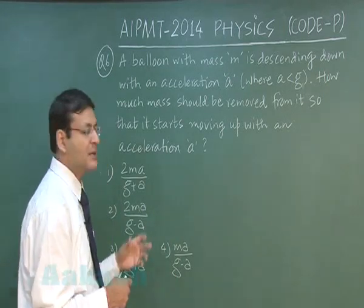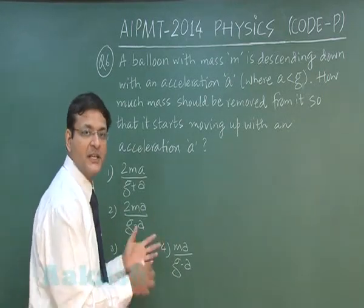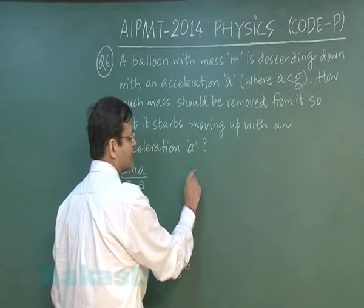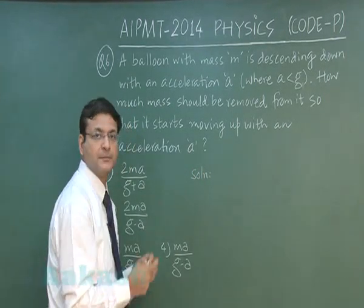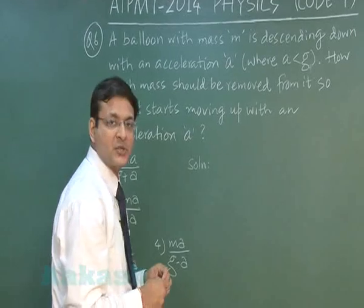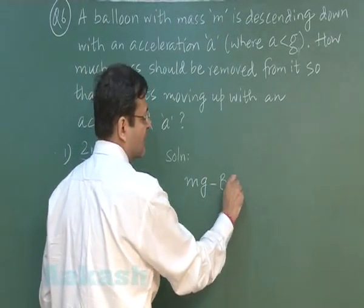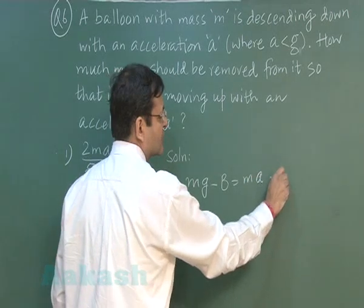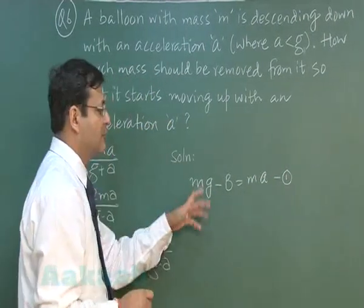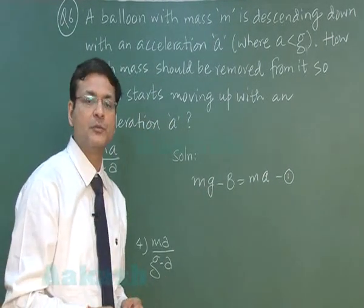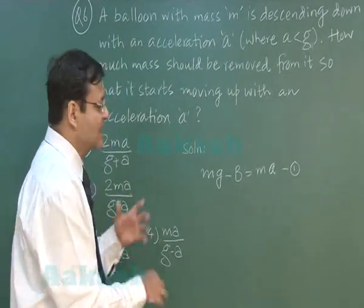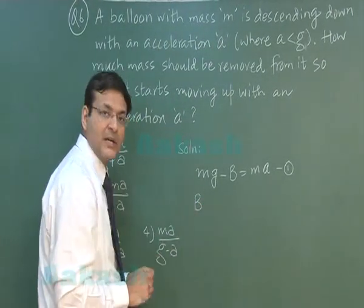In this question, it has been assumed that force of buoyancy is also acting, otherwise it is not possible for the balloon to start going up. In the beginning its weight is dominant, so I am writing mg minus b equals ma. This is the first equation. Force of buoyancy b I have assumed, but in the second case the force of buoyancy becomes dominant.